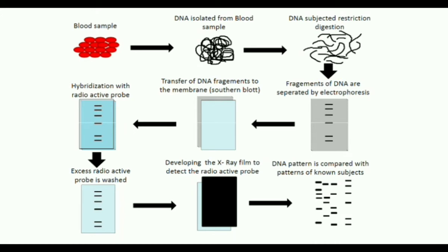We need to separate the fragments using agarose gel electrophoresis. The next step is separation of DNA fragments by agarose gel electrophoresis. Then, the DNA fragments, which are double-stranded, are treated with sodium hydroxide solution — that is, alkali treatment for denaturation — converting double-stranded DNA fragments into single-stranded DNA fragments.